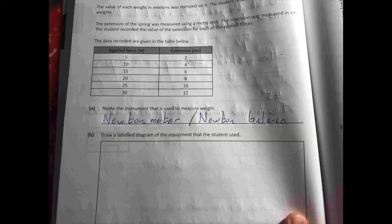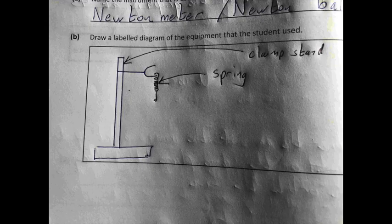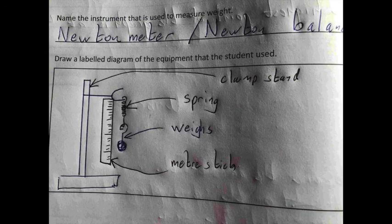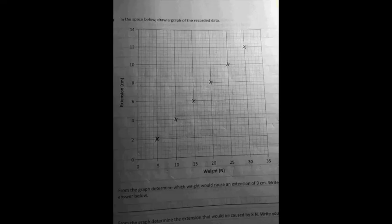Again with this one make sure you're exact about which equipment to use. If you were to say a mass balance here you would not be correct because you're looking at how to measure weight. So a newton meter or a newton balance, draw a labeled diagram: a clamp stand or something to hold the spring in place, a spring, some weights that will make it extend and a meter stick to measure how far it gets extended by.